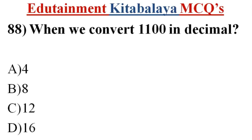Question number 88. When we convert 1100 to decimal. A. 4. B. 8. C. 12. D. 16. Correct answer is C. 12.